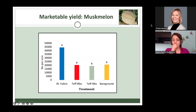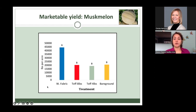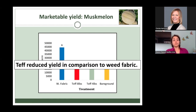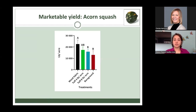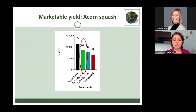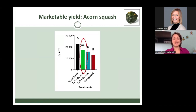For the marketable yield of mossmelon in 2020, the x-axis shows the different treatments and the y-axis shows pounds per acre. TEF reduced yield compared to the weed fabric. For acorn squash, TEF at four pounds per acre reduced yield the least — it was similar to using weed fabric — and reduced yield less than TEF at eight pounds per acre.